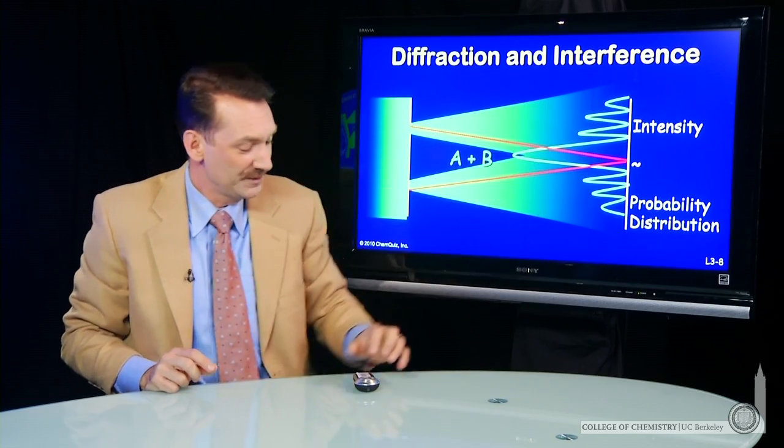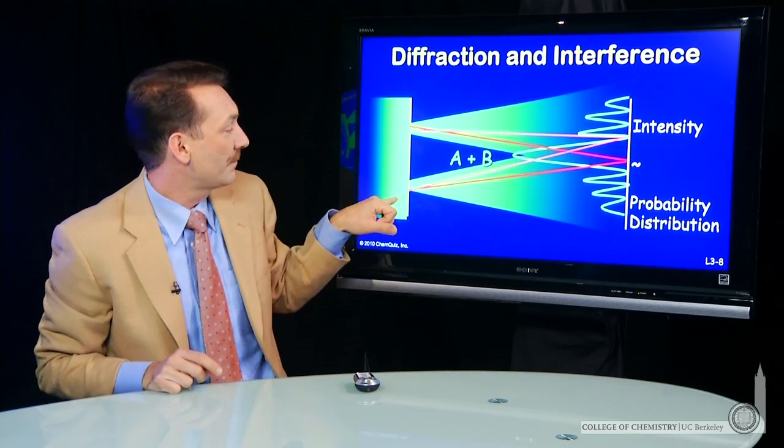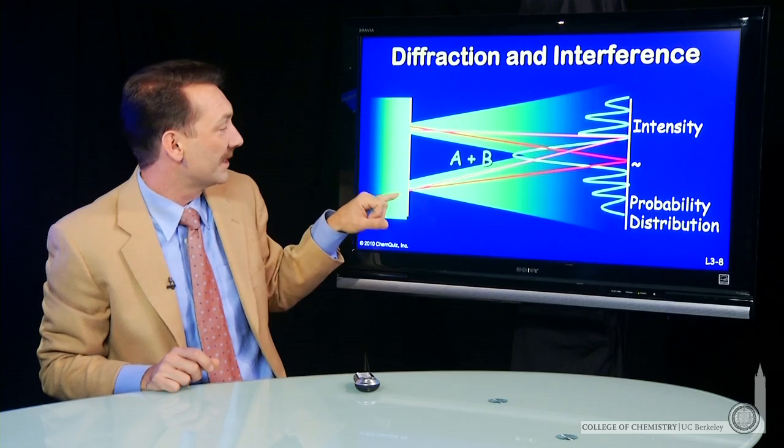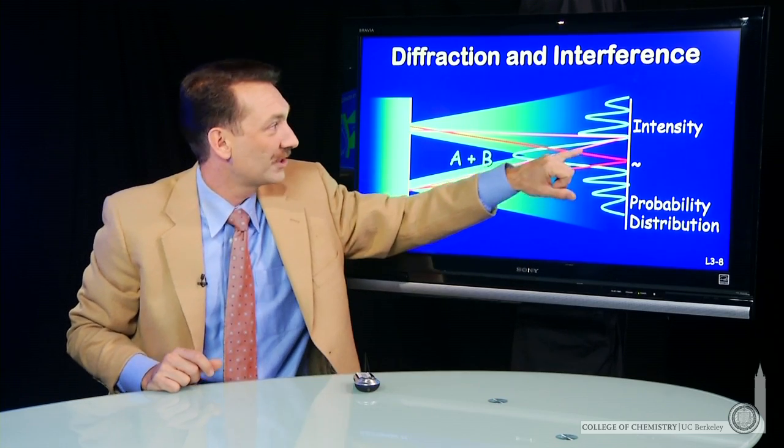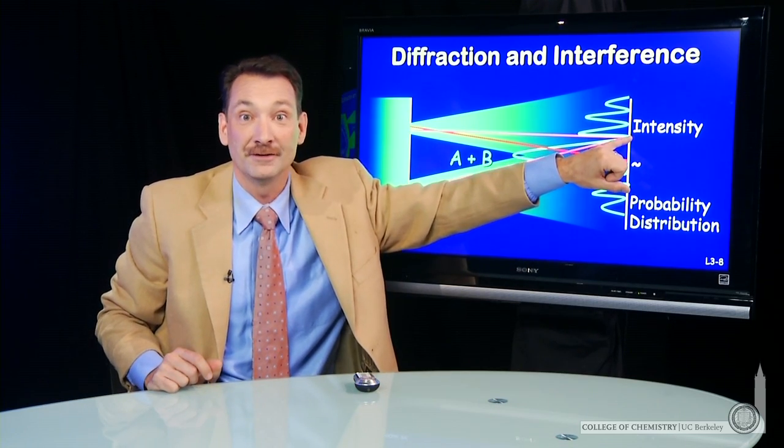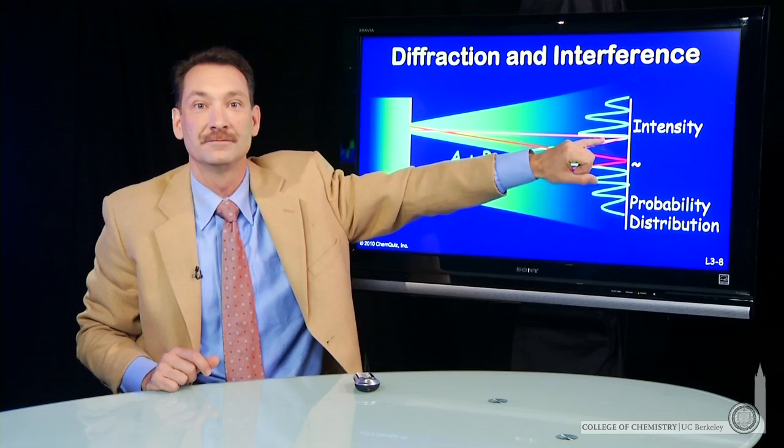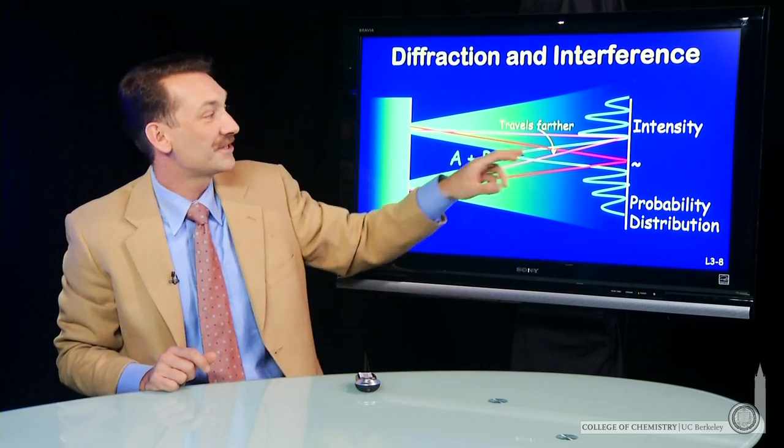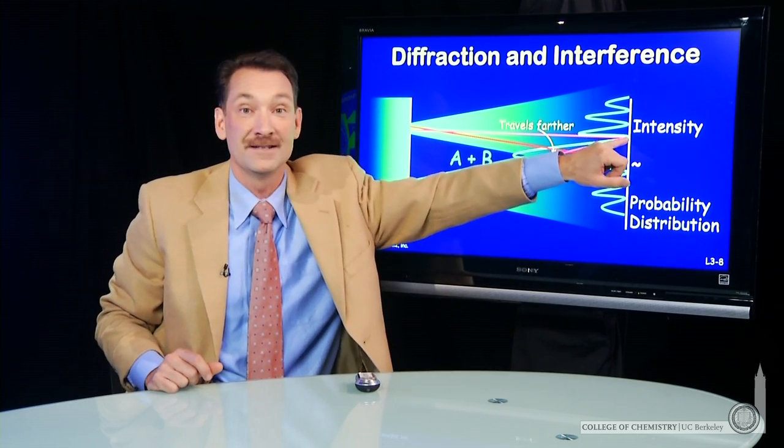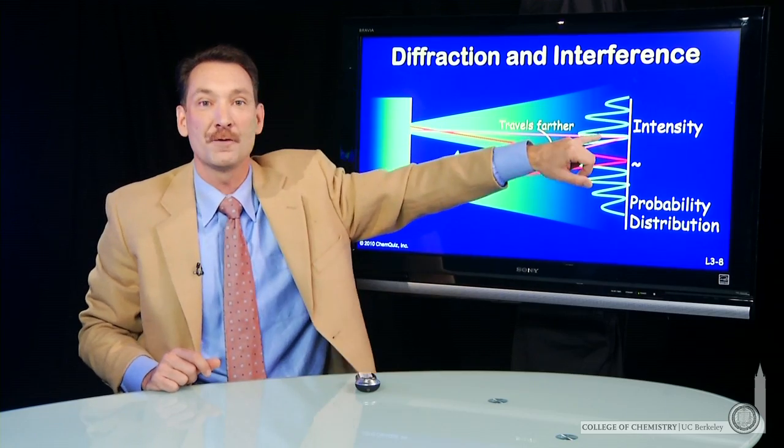Now, what about a dim spot up here? Well, if you think about a wave traveling from this slit and a wave traveling from this slit, this wave now has a longer distance to travel than this wave. So the one that has the farther path is going to be out of phase somewhat with the one that has the shorter path.